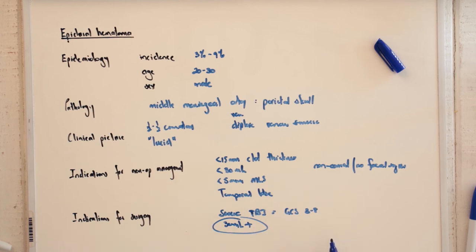But in a comatose patient, which is indeed this patient, usually will have a clot thickness of more than that or a midline shift more than that. But most importantly is this - this is irrespective of whether they are comatose or have focal neurological signs.